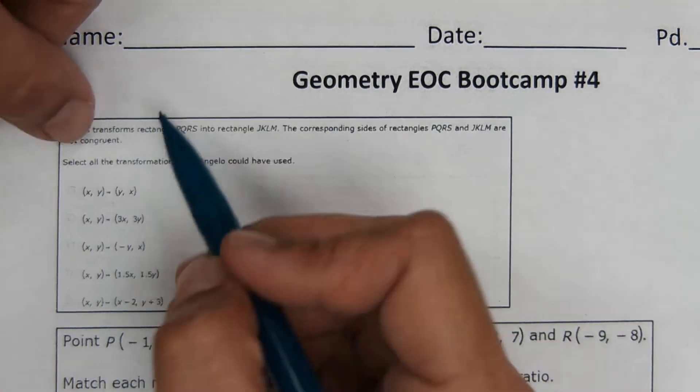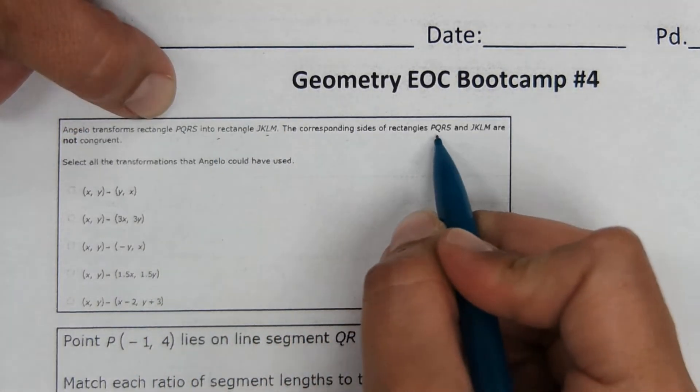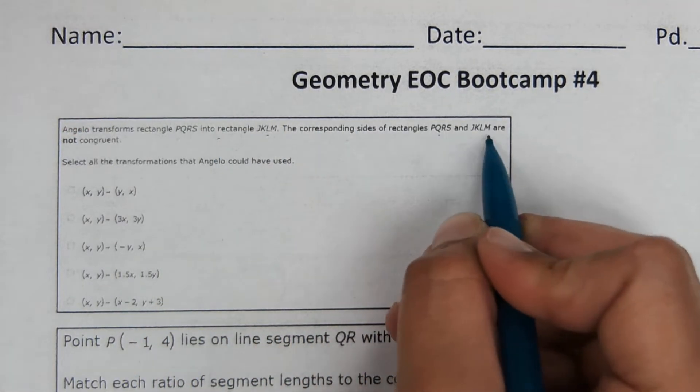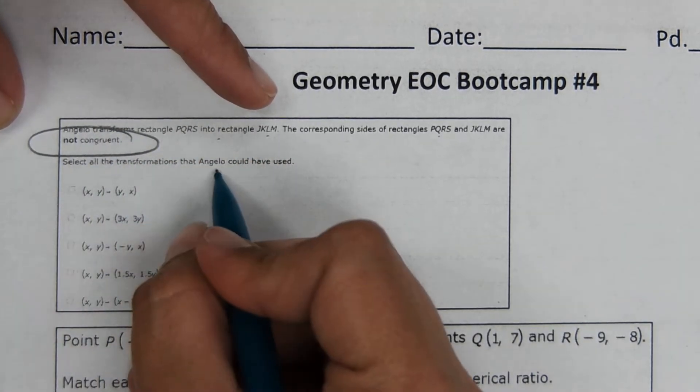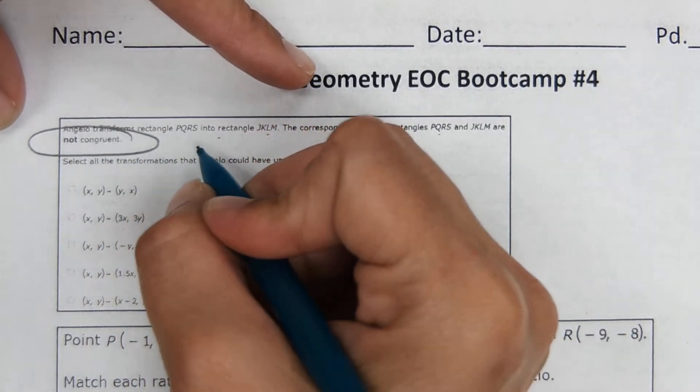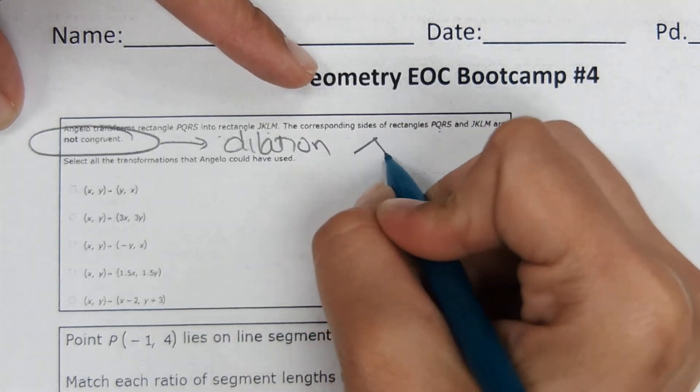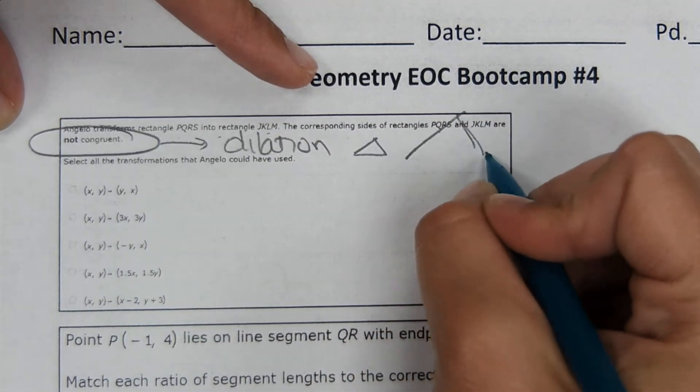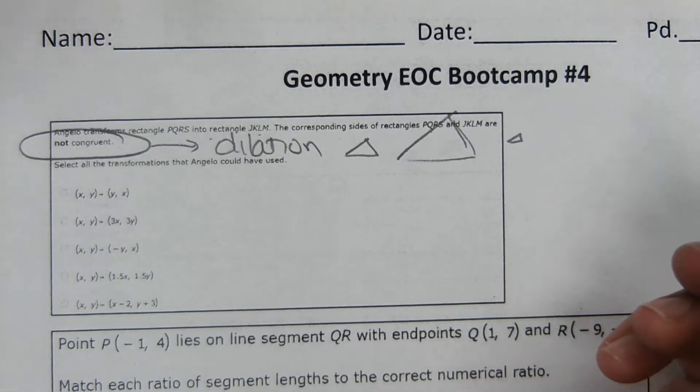Angelo transforms rectangle PQRS into rectangle JKLM. The corresponding sides of rectangle PQRS and JKLM are not congruent. Select all the transformations that Angelo could have used. So the ones that aren't congruent would be a dilation, because a dilation would cause a shape to grow or shrink to a point where the sides are not congruent.